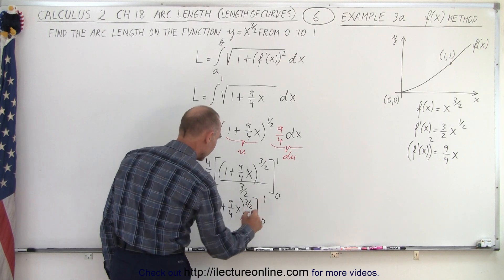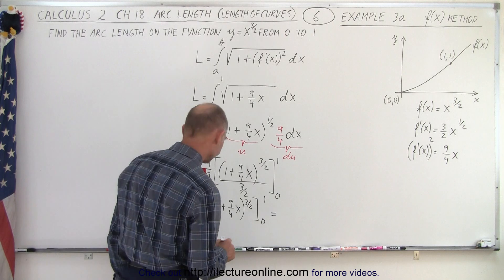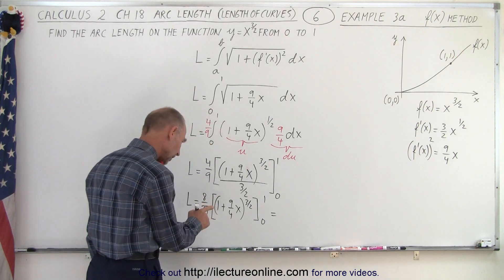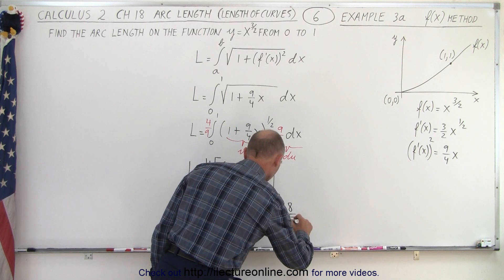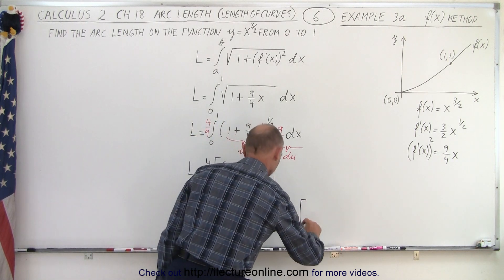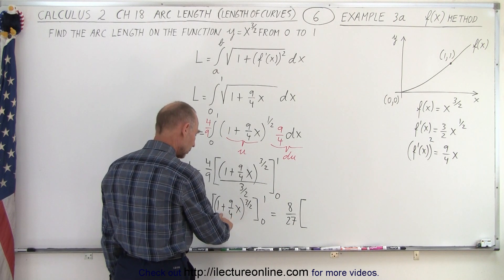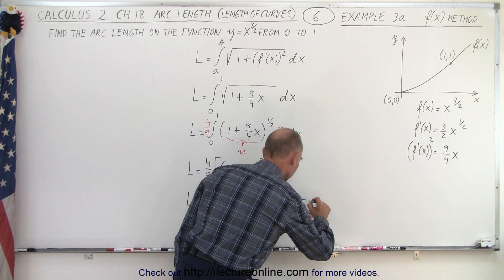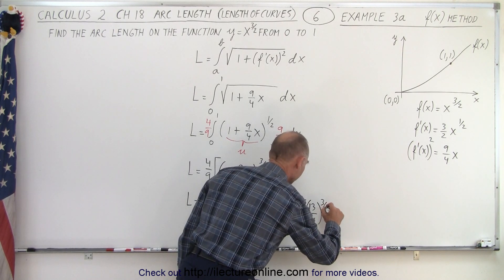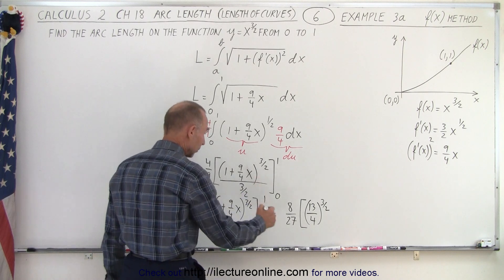All right let's plug in the limits and see what we get. So now when I evaluate that I get eight over 27 times when I plug in the upper limit I get nine over four plus one which is 13 over four to the three halves power. And then when I plug in the lower limit this becomes zero, I get one to the three halves power which is simply minus one like that.